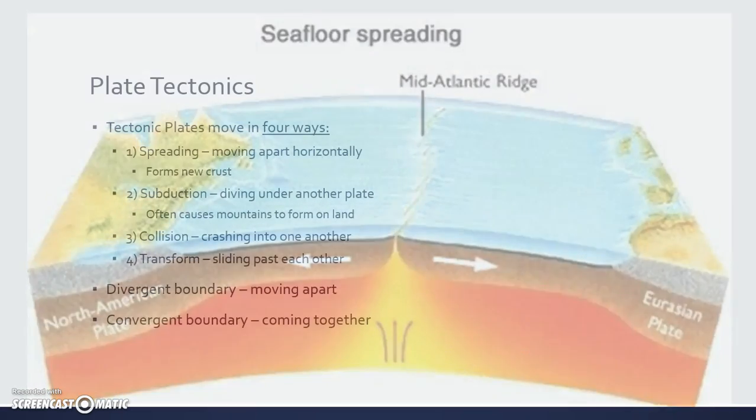Those tectonic plates move in four ways. One way is through spreading — they start to move apart horizontally, and when they move apart, that hot magma underneath the crust rises. When it rises into the ocean, it begins to cool, and as it cools it forms new crust. Eventually that crust might even rise above the water creating new islands. Subduction is another way in which the plates might move, and subduction means that one plate will dive under another plate, which often causes mountains to form on the land.